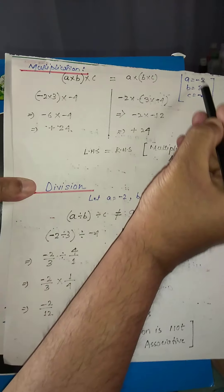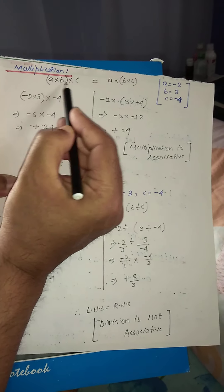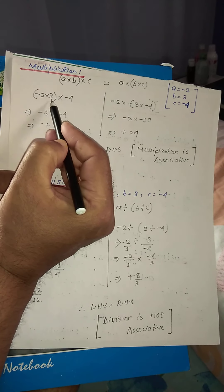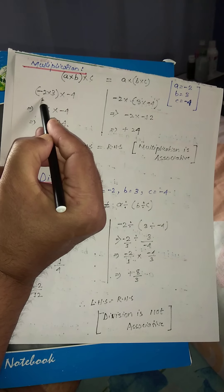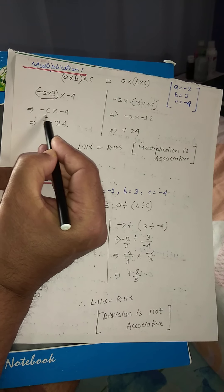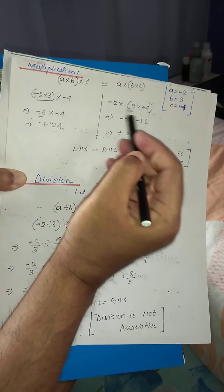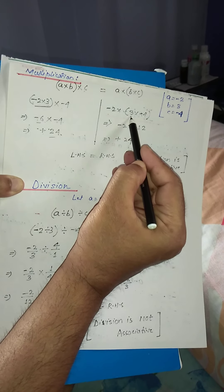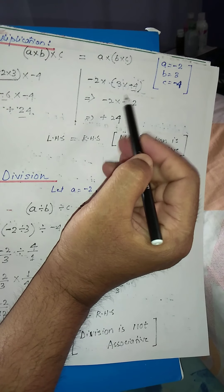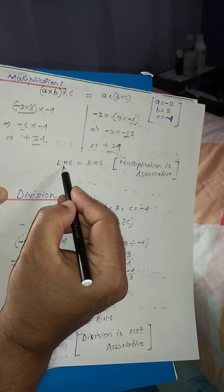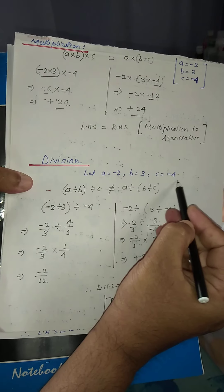Now let's see multiplication, keeping the same values. We have to prove: (a × b) × c = a × (b × c). For the LHS: a equals minus 2, in place of b is 3, in place of c is minus 4. First we multiply the bracket: minus 2 into 3 is minus 6, then minus 6 into minus 4 — minus times minus is plus — gives 24. For the RHS: 3 into minus 4 is minus 12, so minus 2 into minus 12 is plus 24. The answers are matching, so LHS equals RHS: multiplication is associative for integers.